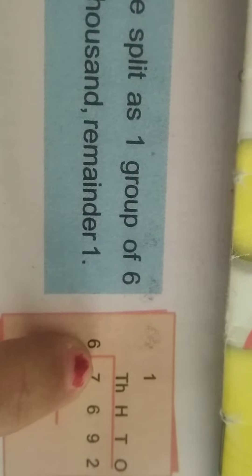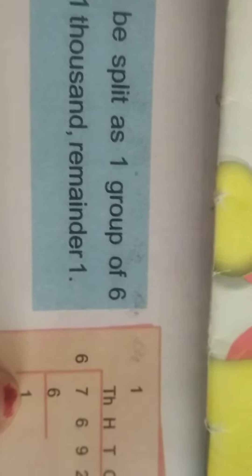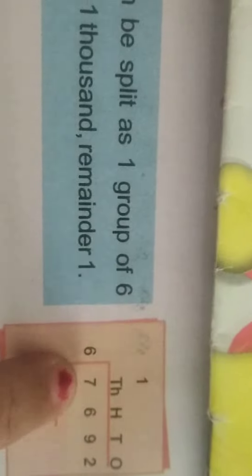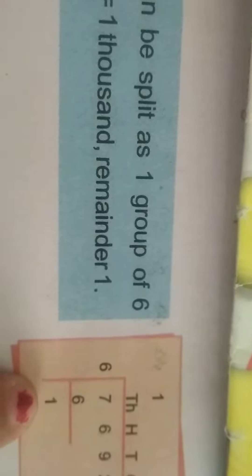Step 1: 7,000 can be split as 1 group of 6,000. So 7 divided by 6 equals 1,000 with remainder 1. 7,692 divided by 6: 7 by 6 is 1,000, and the remainder is 1.